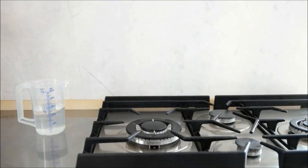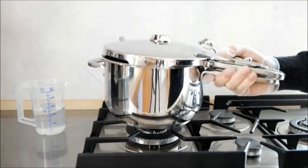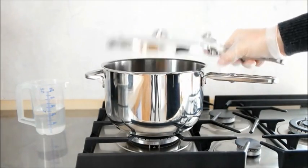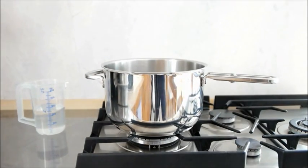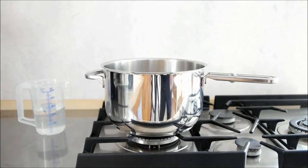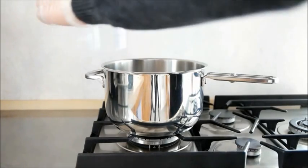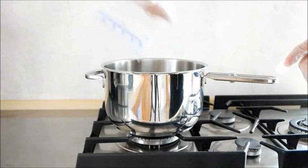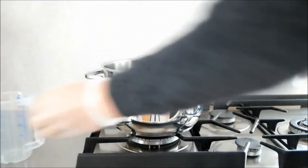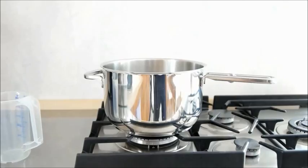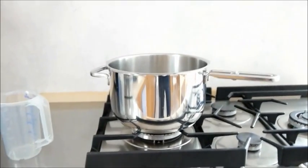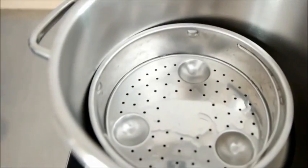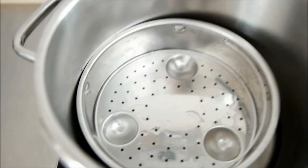Put your pressure cooker on the cooking plate and put in around one centimeter of water and use an insert where you can put your Erlenmeyer flask on.